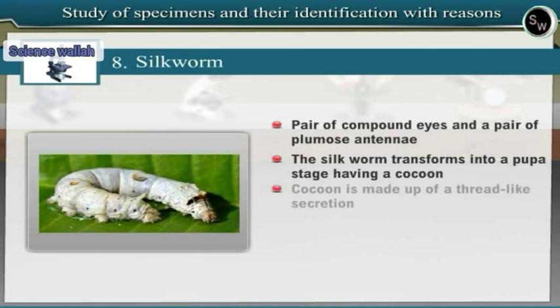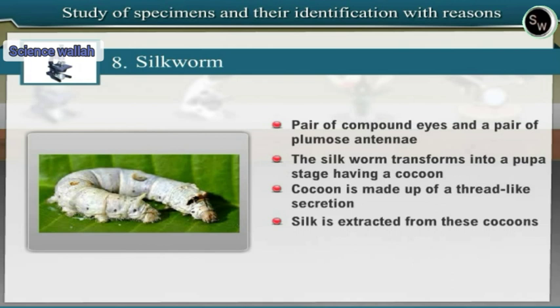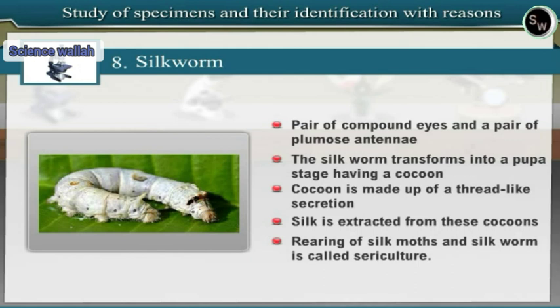The cocoon is made up of a thread-like secretion made by the silkworm. Silk is extracted from these cocoons. Pupae are sacrificed to obtain silk, but some moths are allowed to grow for further development on mulberry trees. Rearing of silk moths and silkworms is called sericulture.